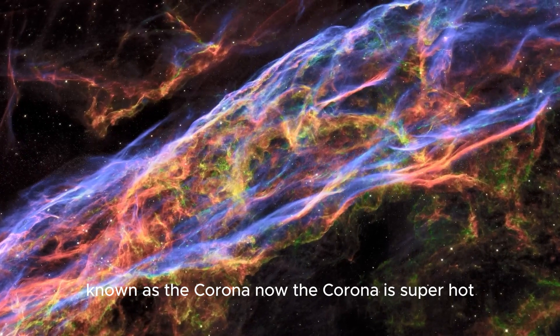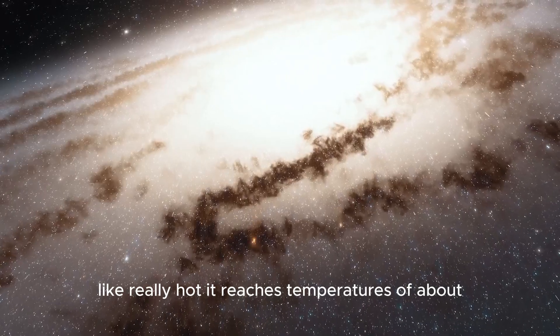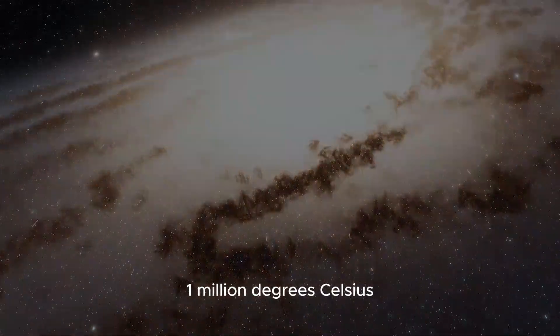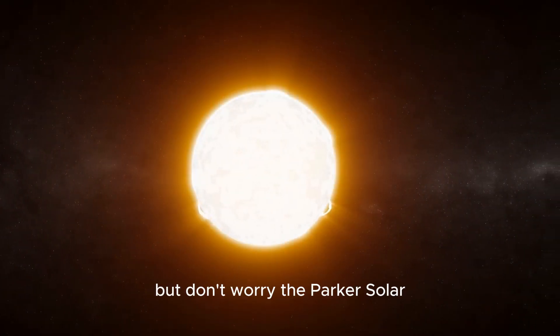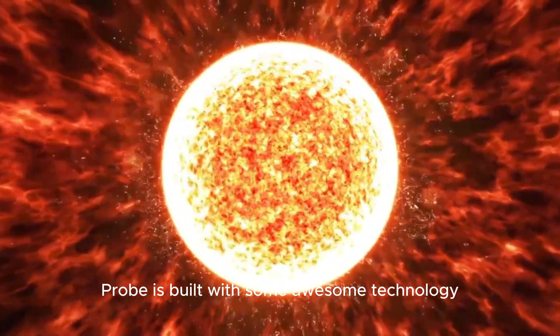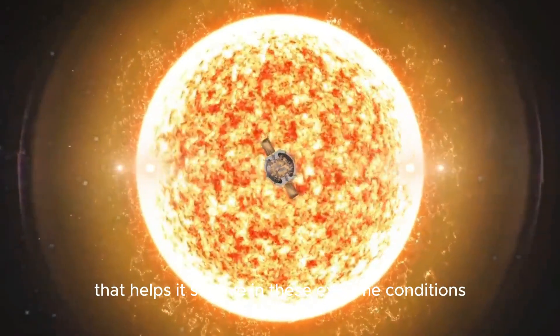Now, the Corona is super hot, really hot. It reaches temperatures of about 1 million degrees Celsius. But don't worry, the Parker Solar Probe is built with some awesome technology that helps it survive in these extreme conditions.